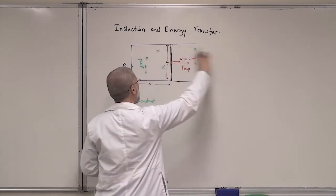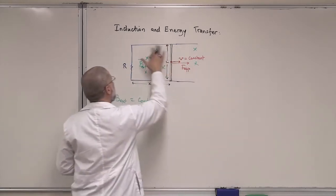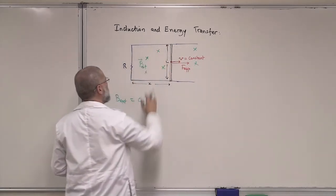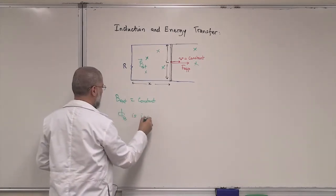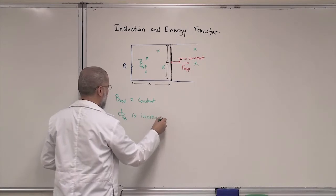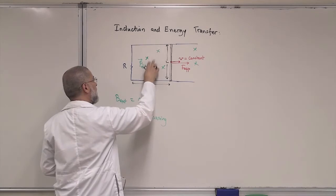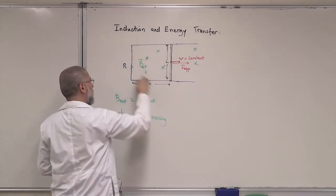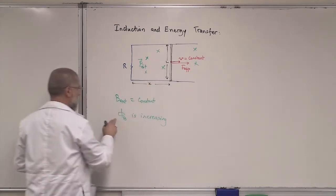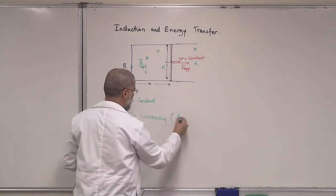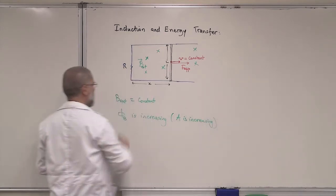So I'm moving this rod to the right, increasing the area here, so there is an increasing flux — phi B is increasing. If I move it to the left, the closed area will decrease and the flux will decrease. But here, the flux is increasing because A is increasing, not because B is increasing. B is constant in this problem.